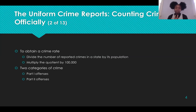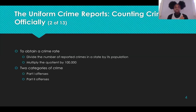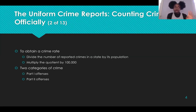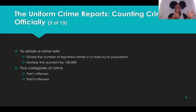Crimes can be separated into two broad categories: part one offenses and part two offenses. Part one offenses consist of four violent types of crimes and four property offenses. The four violent crimes are homicide, assault, forcible rape, and robbery. The four property offenses are larceny/theft, burglary, motor vehicle theft, and arson.